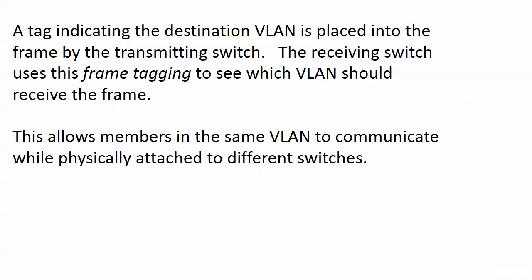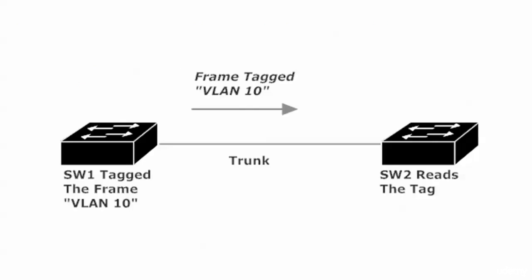A tag indicating the destination VLAN is going to be put into the frame by the transmitting switch, and the receiving switch uses that frame tagging to see which VLAN should receive the frame. This allows members in the same VLAN to communicate while physically attached to different switches — especially in real-world networking, we're going to have hosts on different switches be in the same VLANs.